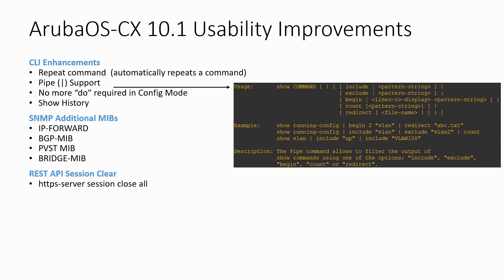With release 10.1 the pipe option is supported, allowing you to filter information based on operators you provide after the pipe. The example on this slide shows you the options. Release 10.1 now supports some additional SNMP MIBs: the IP Forward, BGP, PVST and Bridge MIBs. And you can now clear REST sessions with the HTTPS server session close all command. This comes in handy when you have no more REST sessions available — with release 10.0 you had to wait until the aging timer timed out, and now you can just clear the sessions.